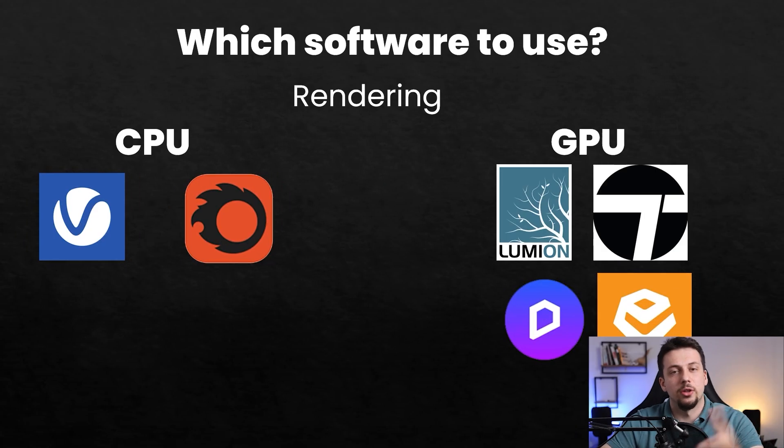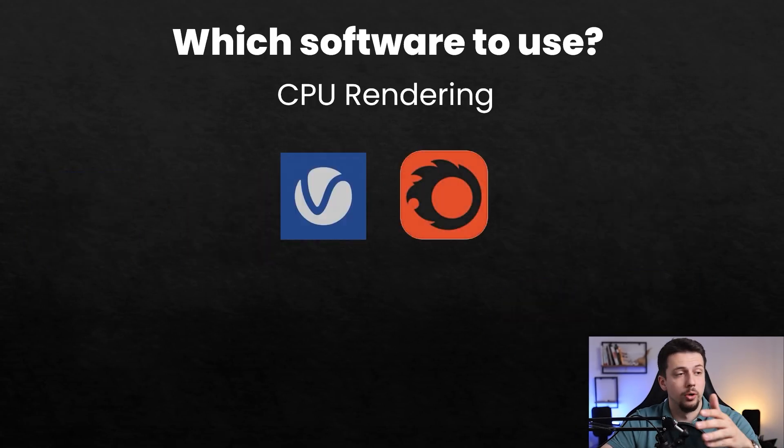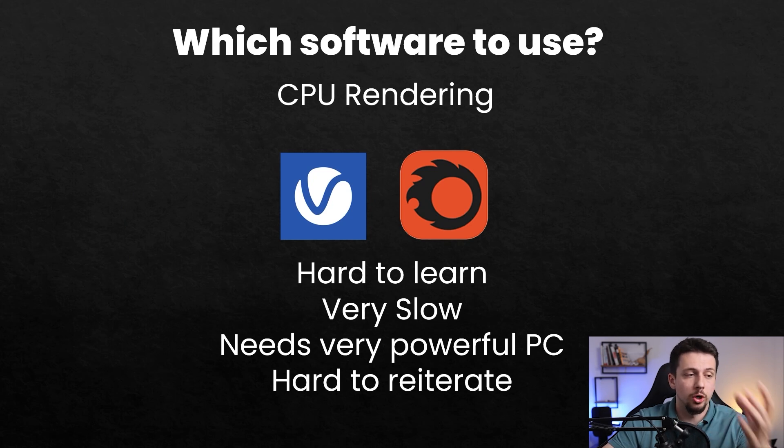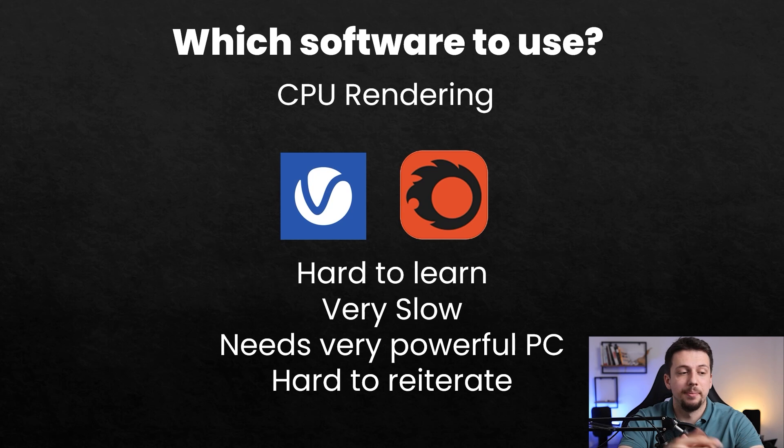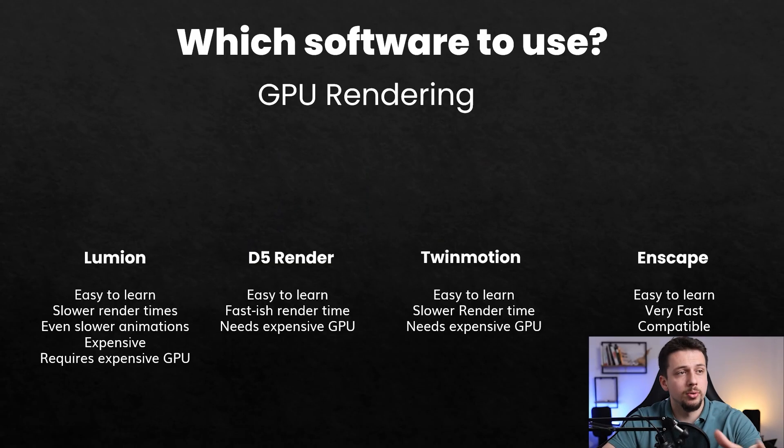The CPU rendering software like Corona and V-Ray are very hard to learn, very slow, and need a very powerful PC. This makes it very hard to reiterate because as an architect you'll have a lot of design changes, a lot of input and feedback. The quality of these is very good — that is not arguable — however, there's a huge price tag that comes with the accurate calculations that these software offer.